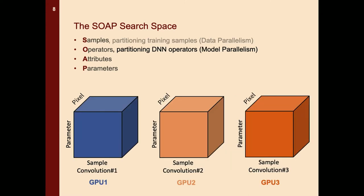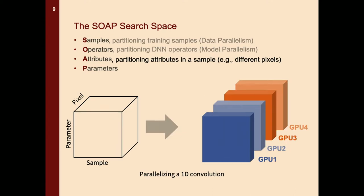The second dimension we consider is the operator dimension, which partitions different DNN operators across different devices. The bottom figure shows one example of model parallelism that assigns different convolution operators to different GPU devices. The third dimension in SOAP is the attribute dimension, which partitions different attributes within a sample to different devices. You can think of attributes as pixels in your image — if you have a high-resolution image, you can assign different sub-images to different devices to parallelize your computation.